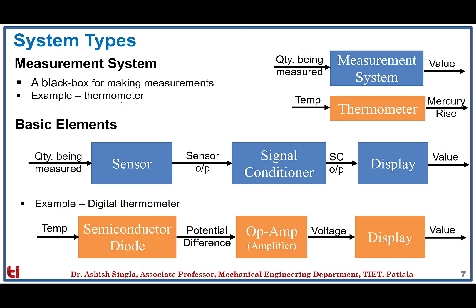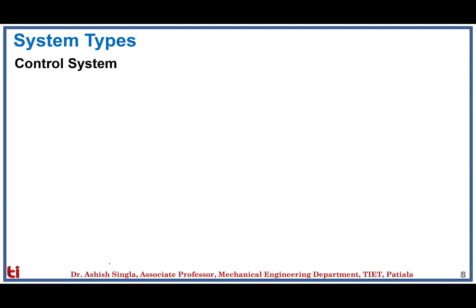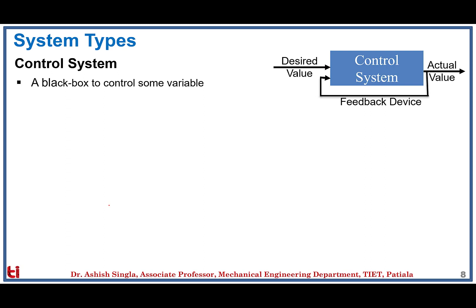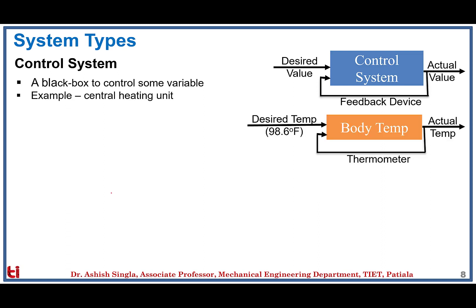The control system is treated as a black box to control some variable to a definite value. Most control systems include a feedback device. The input is the desired value of the parameter and the output is the actual value, which is fed back via a sensor. For example, in the human body cycle, the desired temperature is 98.6°F and the actual temperature can be measured with a thermometer acting as the sensor. The body's natural control system works automatically to maintain this desired temperature.